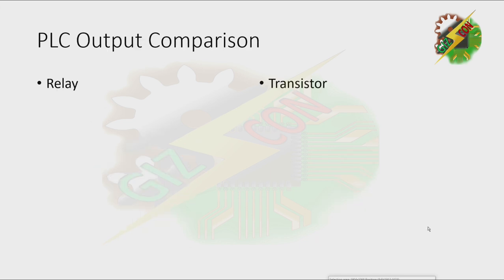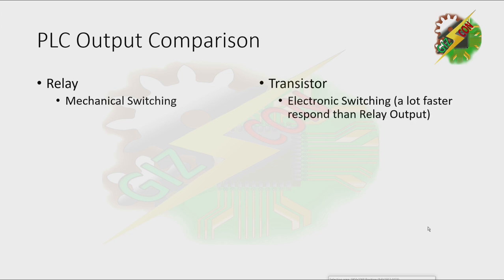Next, let's compare relay and transistor PLC outputs. For relay, it performs mechanical switching. For transistor, it performs electronic switching, which has a much faster response than relay output. The question is: why do we need to use transistor instead of relay, or why use relay instead of transistor?